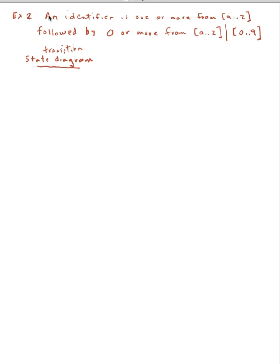This particular example is near and dear to computer science people's hearts, and that is to recognize an identifier. You have to define what the identifier is, and so this is a simplified definition of what is an identifier.